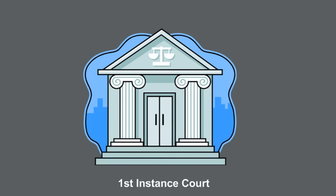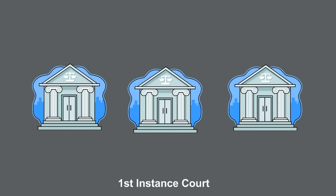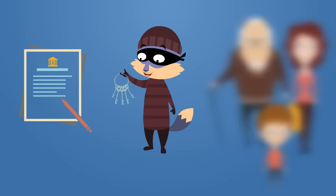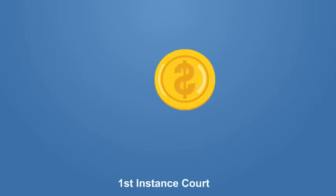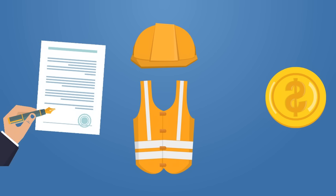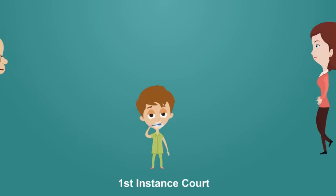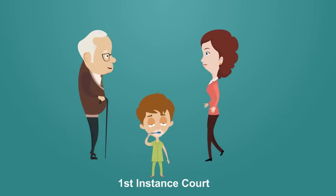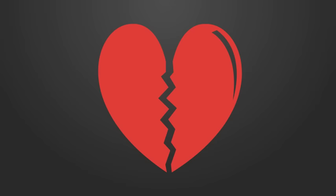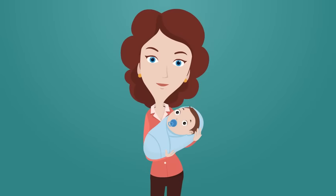The court of first instance has general jurisdiction and is divided into three sections: civil, criminal, and personal status. The civil cases section looks into commercial, labor, and contract litigations, while the personal status court has jurisdiction over family cases like inheritance, divorce, alimony, and child custody.